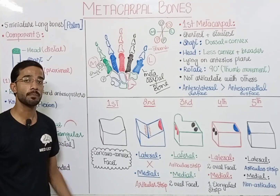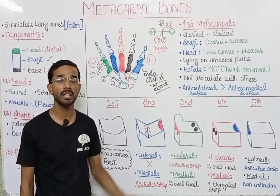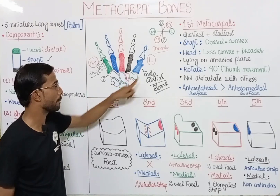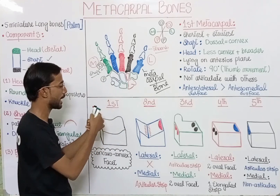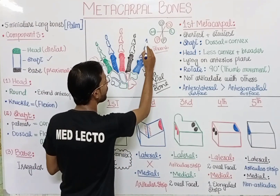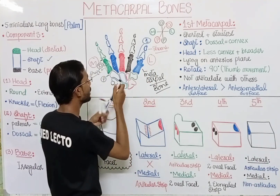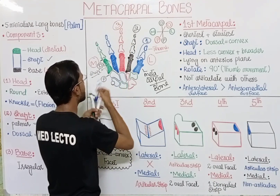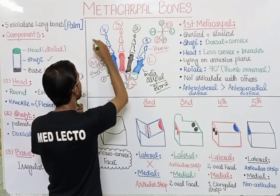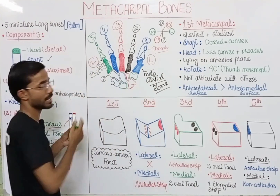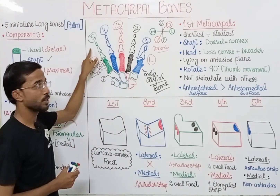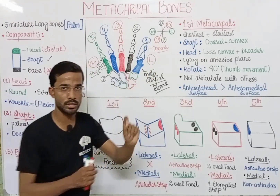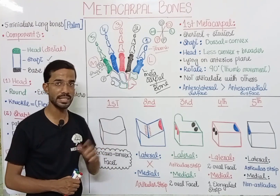The most important metacarpal is the first metacarpal, which lies beneath the thumb. We number the metacarpals from lateral to medial. The first metacarpal is the shortest and the strongest bone among the metacarpals.